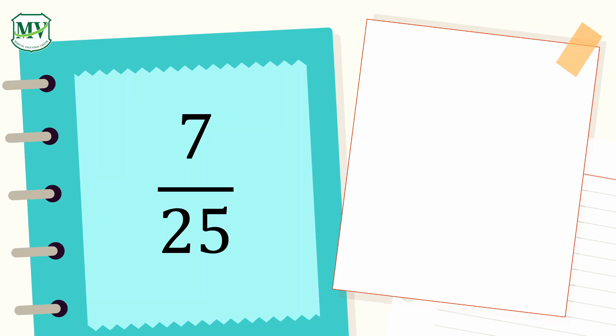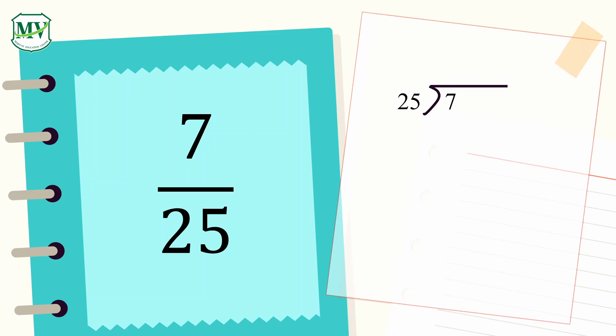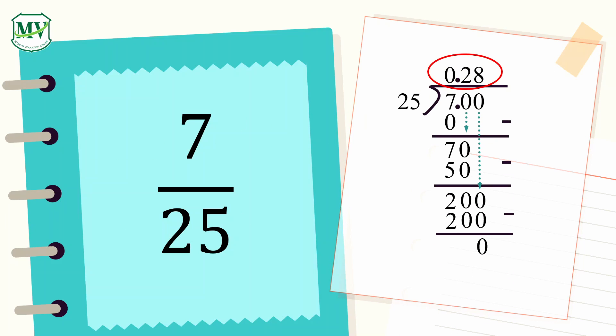Now, it's your turn. Convert 7 over 25 to a decimal. Make sure to remember the steps. 7 over 25 is equal to 28 hundredths.